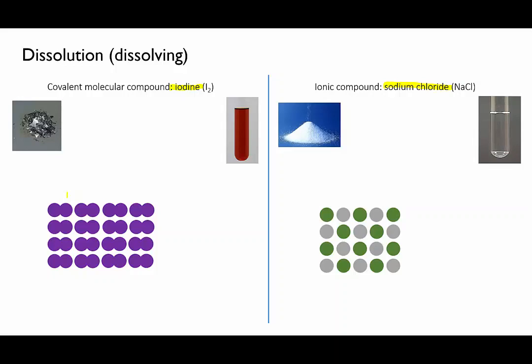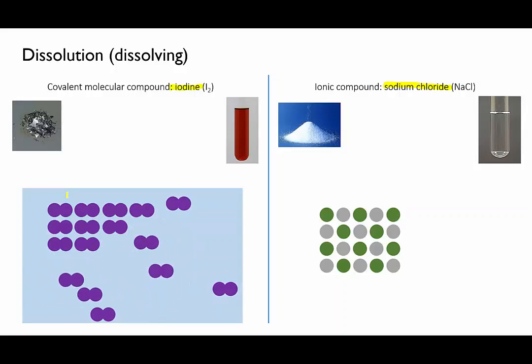At the molecular level, when a molecular compound like iodine dissolves in water, the individual molecules separate from each other and spread out through the water. Notice that I'm not showing the individual water molecules here, we're just assuming that they're there. Now this is really important: the covalent bonds within each molecule don't break when they dissolve. Each I2 molecule remains unchanged. Rather, it's the weak attractions which held the molecules together in a crystal that break and allow the molecules to move freely about.